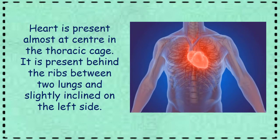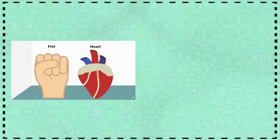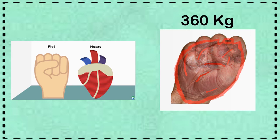So now, let's begin with the heart — its structure and function. The heart is present almost at the center of the thoracic cage. It is present behind the rib, between the two lungs and slightly inclined on the left side. The size of the heart is equal to one's own fist and its weight is about 360 grams.